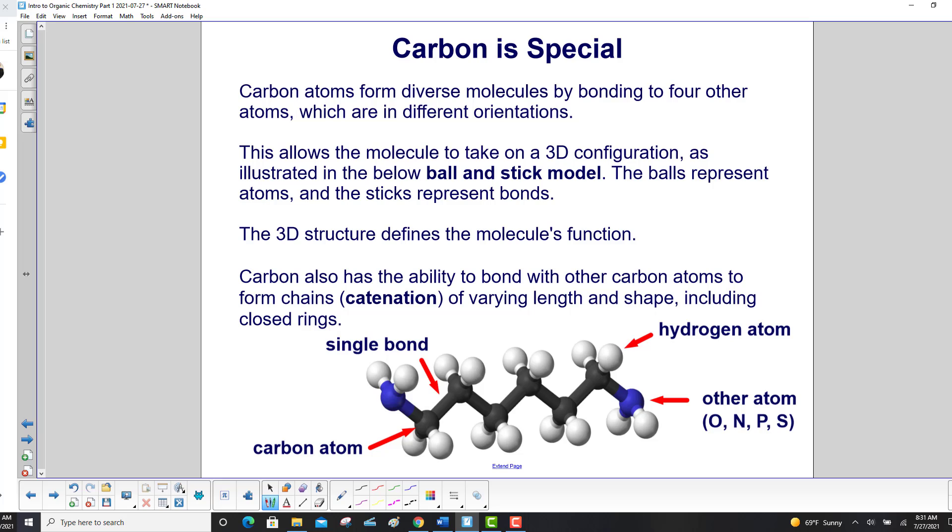Carbon is special. Carbon atoms form diverse molecules by bonding to four other atoms, which are in different orientations. This allows the molecule to take on a three-dimensional configuration, as illustrated in the ball and stick model. The balls represent atoms, and the sticks represent bonds. The 3D structure defines the molecule's function.